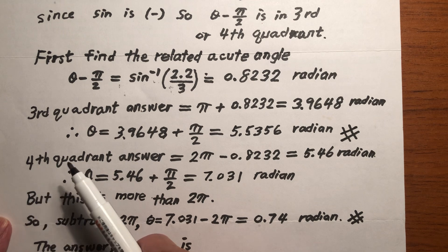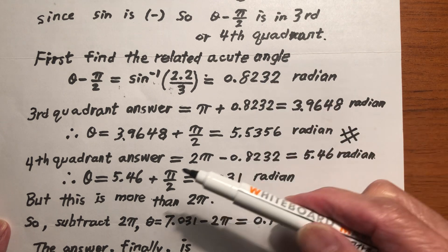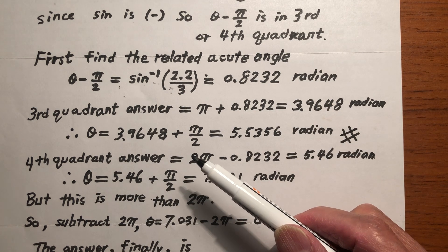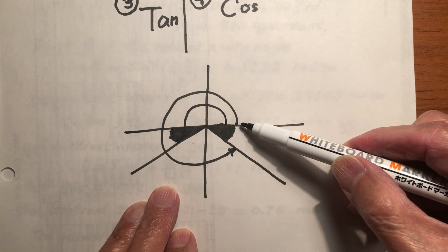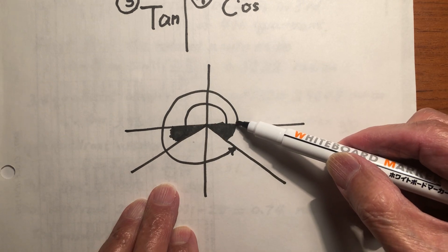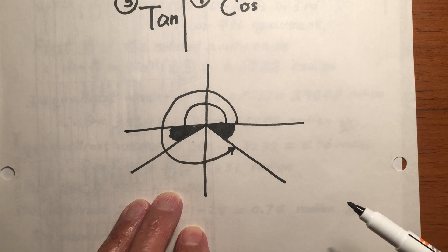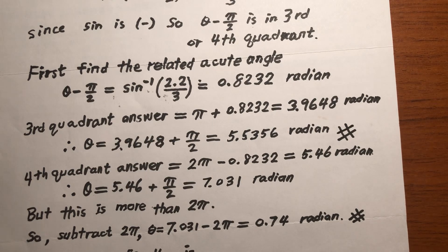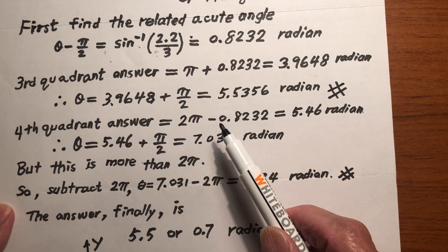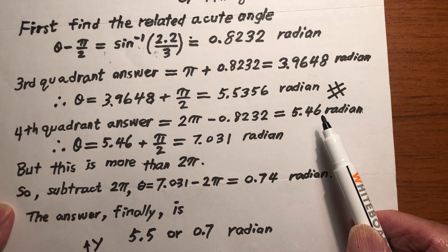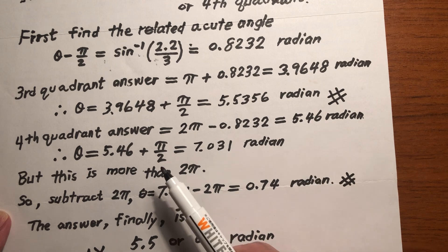Now I have another answer, which is in the fourth quadrant. The related acute angle is the same. The fourth quadrant angle is 2π minus the related acute angle. So theta minus pi over two equals 2π minus the related acute angle. Therefore, theta equals 2π minus the related acute angle plus pi over two.